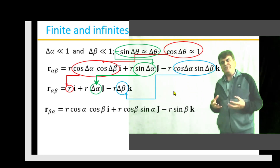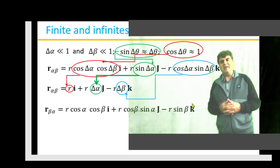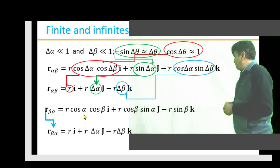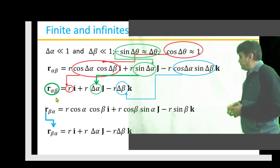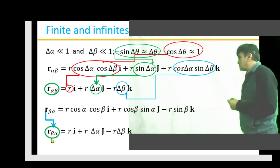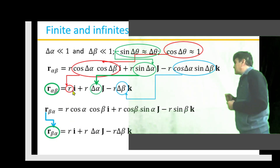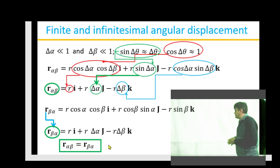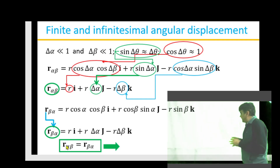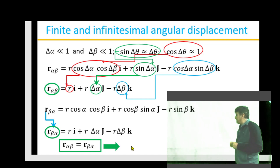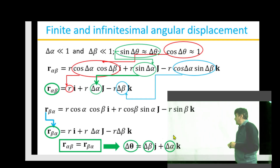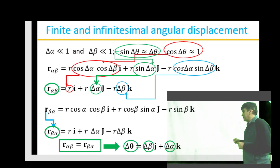Following the same procedure for r_{beta,alpha} we can express it in the same form. A term-by-term comparison now shows that r_{alpha,beta} = r_{beta,alpha} — the sum of two rotations in one case exactly agrees with the sum in the other case. Therefore for an infinitesimal angular displacement δθ, we can write δθ = δβ·j + δβ·k, confirming that infinitesimal angular displacement is indeed a vector quantity.